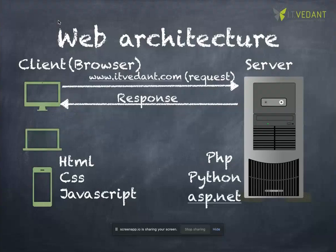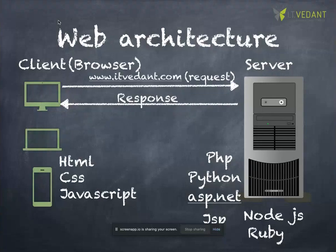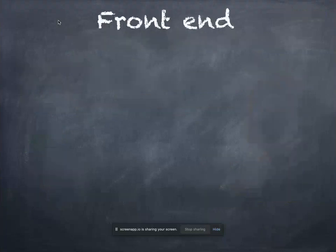At the server side, there are many options: PHP, Python, .NET, Java, Node.js — all are available. So in a web application, there are two parts: front end, meaning the client-side or browser-side application, and back end, meaning the server-side. HTML, CSS, and JavaScript go to the front end, while languages like PHP and Python go to the back end.